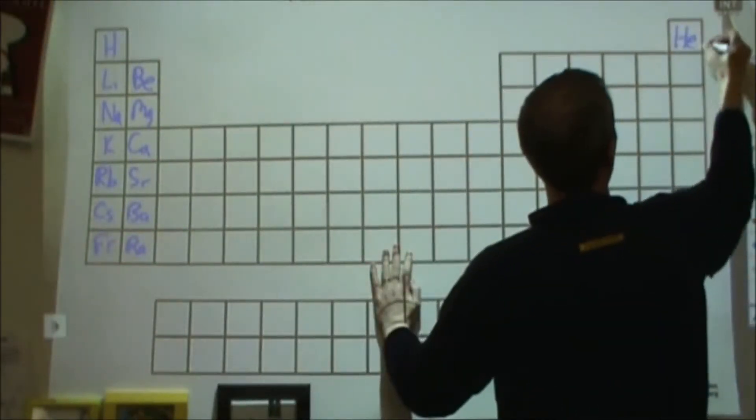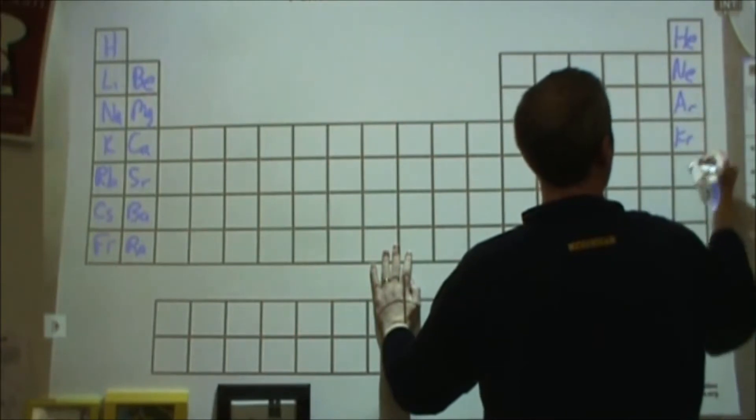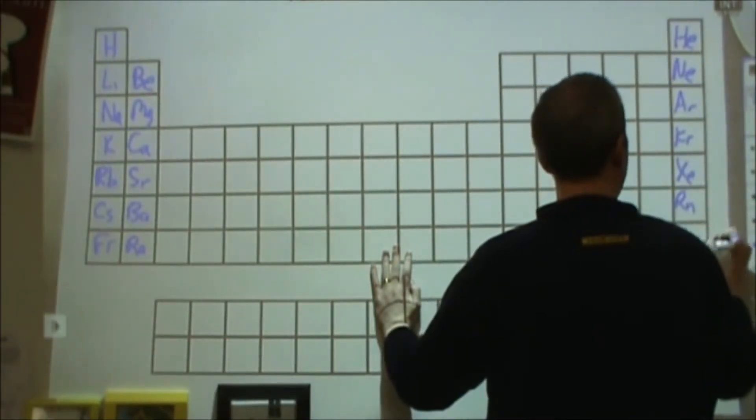Over here we've got helium, neon, argon, krypton, xenon, radon, and ununoctium.